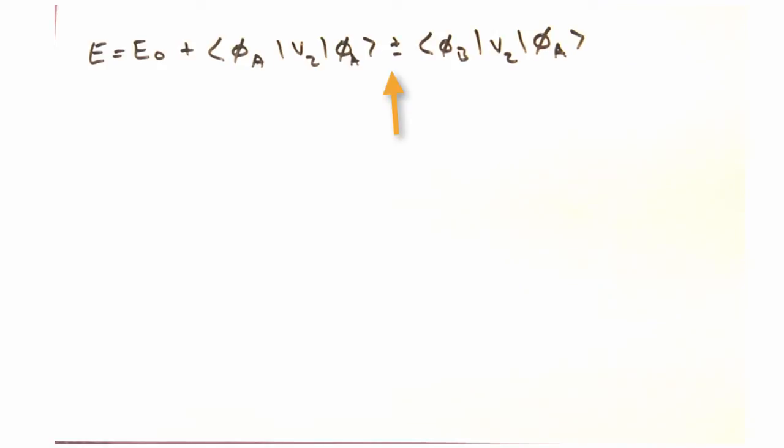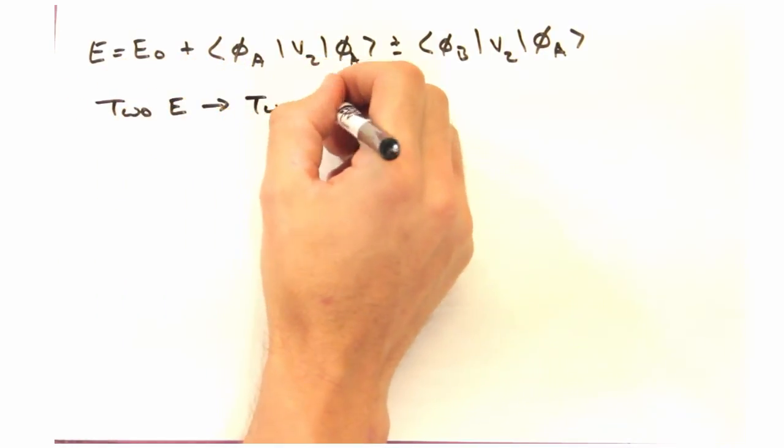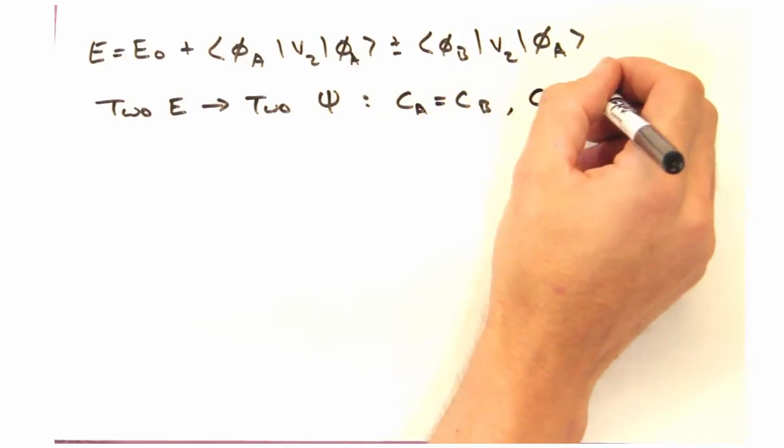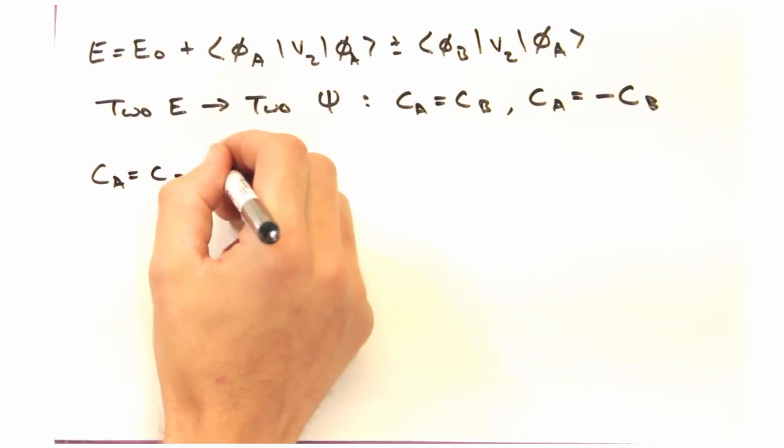Since we have this plus minus in the expression, it looks like we have two energies for the electrons. And with these two energies, you can show that there are two molecular wave functions psi. One of these has Ca equal to Cb, and the other has Ca equal to negative Cb.